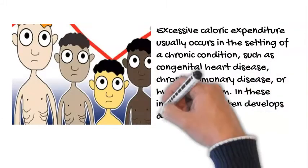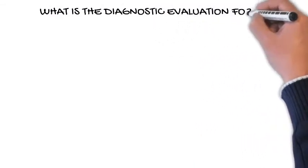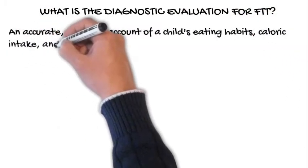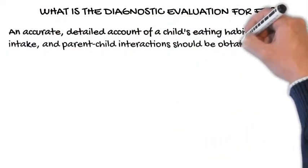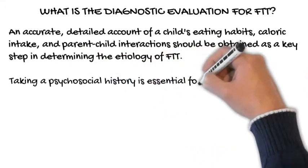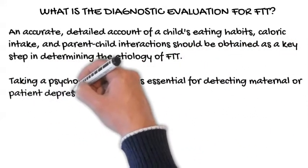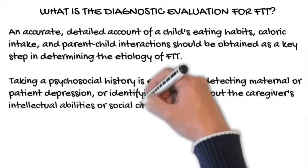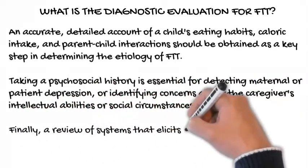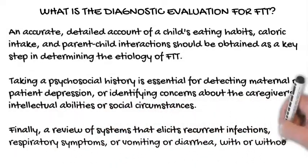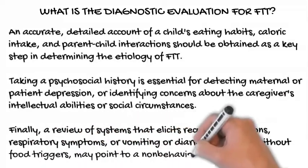What is the diagnostic evaluation for FTT? An accurate, detailed account of a child's eating habits, caloric intake, and parent-child interactions should be obtained as a key step in determining the etiology of FTT. Taking a psychosocial history is essential for detecting maternal or patient depression, or identifying concerns about the caregiver's intellectual abilities or social circumstances. Finally, a review of systems that elicits recurrent infections, respiratory symptoms, or vomiting or diarrhea, with or without food triggers, may point to a non-behavioral cause.